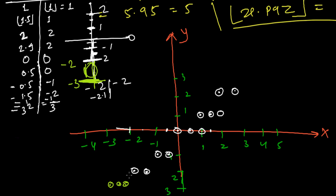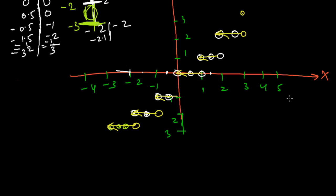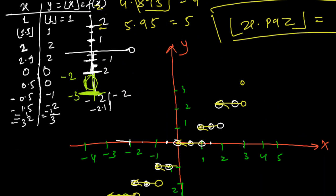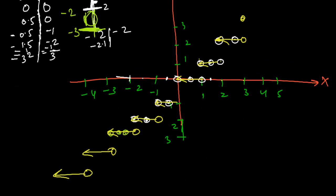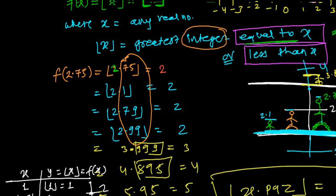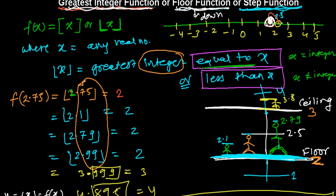The resulting graph looks like a staircase. At each integer, there's a void at one end and a filled point at the other — a steep jump. At x = 3 you get 3, at x = 2 a steep jump up, at x = 1 a steep jump up — that's why it's called a step function. The properties of this greatest integer function will be discussed in the next video.